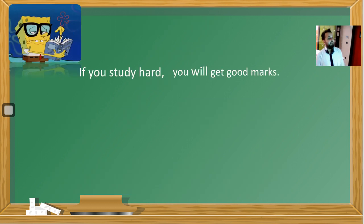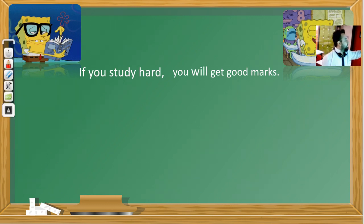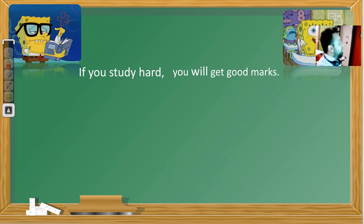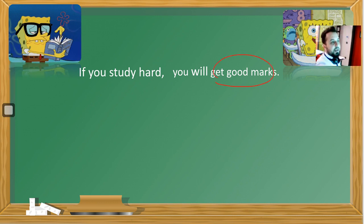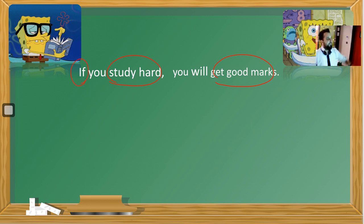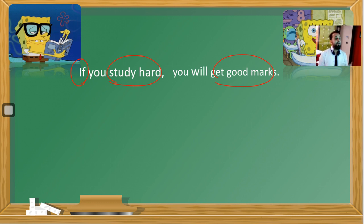Let's give another example: 'If you study hard, you will get good marks.' Our main action is getting good marks. To get a good mark, our condition is studying hard. We make this condition by using 'if' in the sentence. Our main action is getting good marks — if you study hard, you will get a good mark.